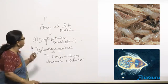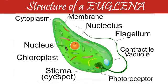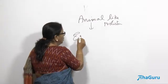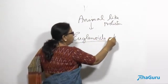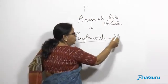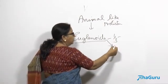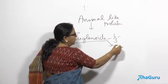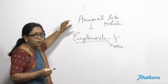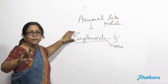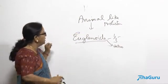Let us talk about another group known as euglenoids. Initially, euglenoids were classified under plant-like protists, but they found that most euglenoids — euglena is a good example — only one third of them have chloroplasts, meaning they are photosynthetic. The rest of the euglenoids are heterotrophic and live like animals. They did not know whether to keep them in plant-like or animal-like protists, so now they have given them a separate group called euglenoids.